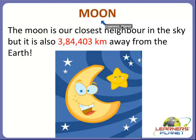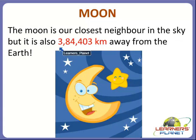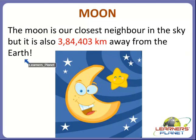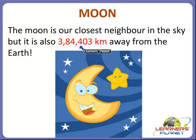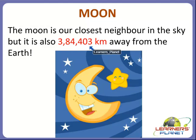So what is the moon, children? The moon is our closest neighbour in the sky. But it is also 384,403 kilometres away from the earth. You can see how far the moon is. But in the solar system, the moon is our closest neighbour.